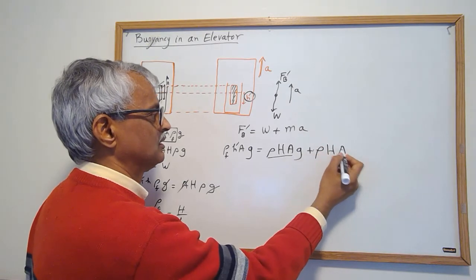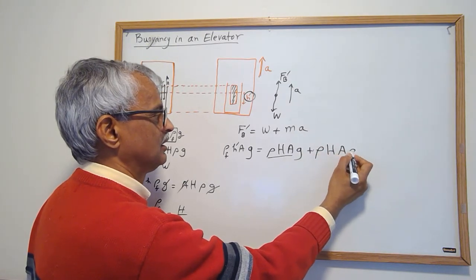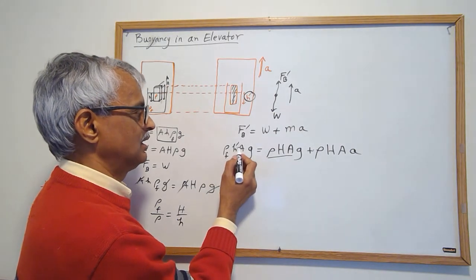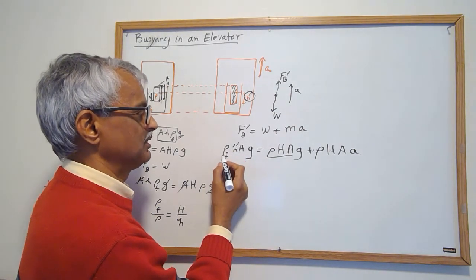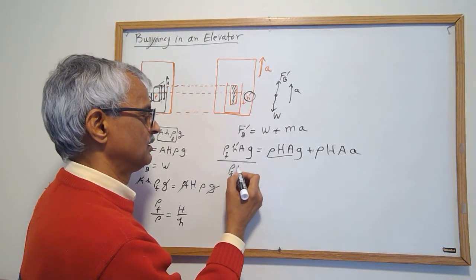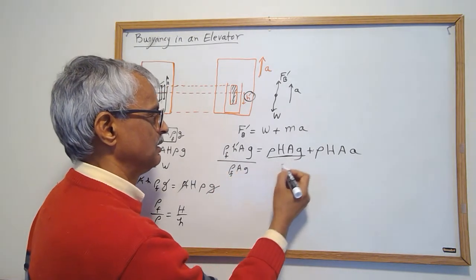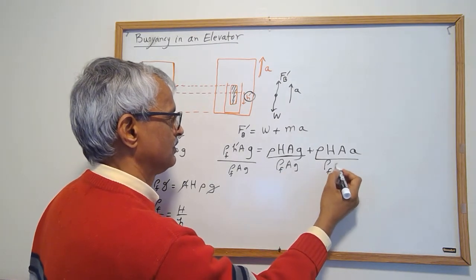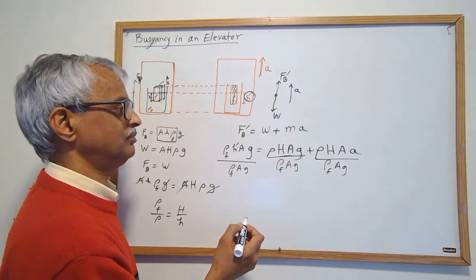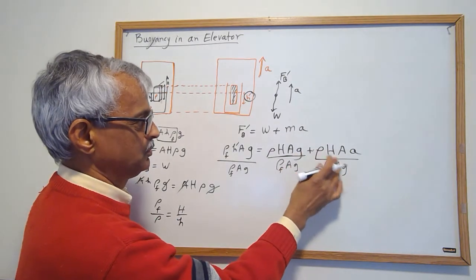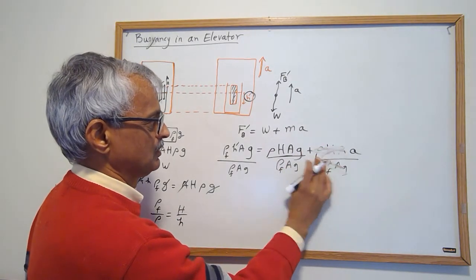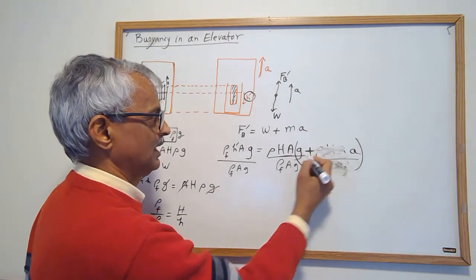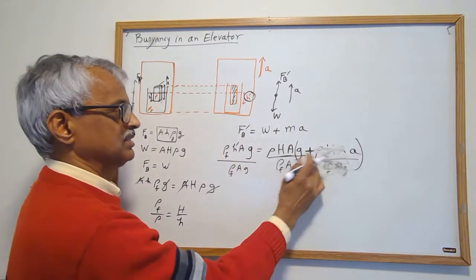So I see that to solve for h prime I just divide by this, so divide by ρf A g. Another thing I notice is I don't have to do two divisions, they're the same, so it's g plus a, acceleration going up, so it's g plus a here. So I've got A cancelling out, A cancelling out, g cancelling out.